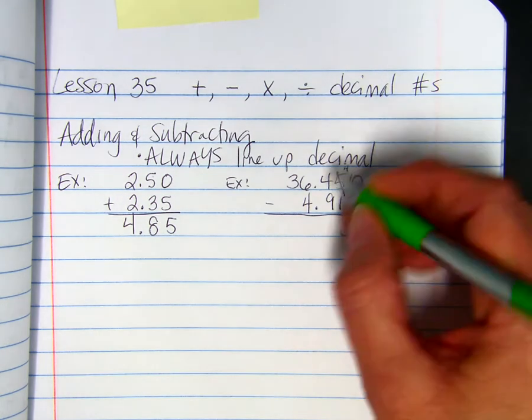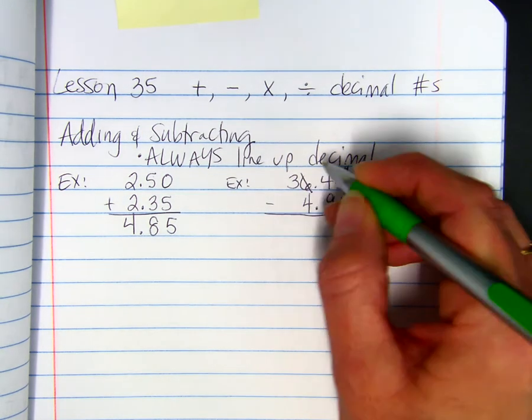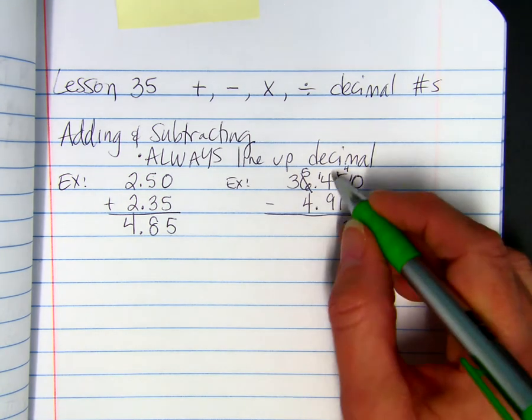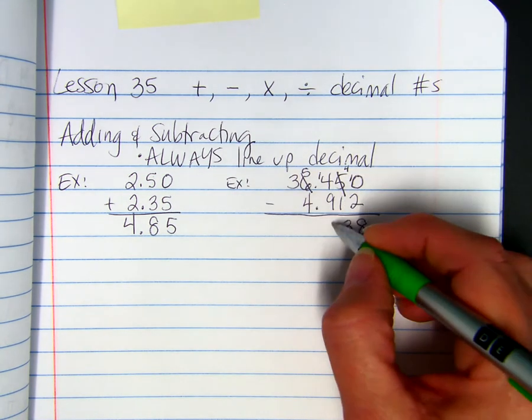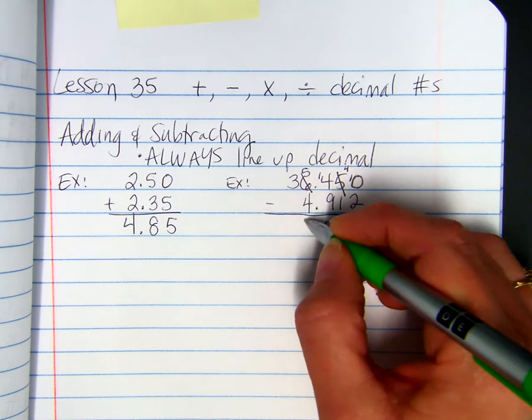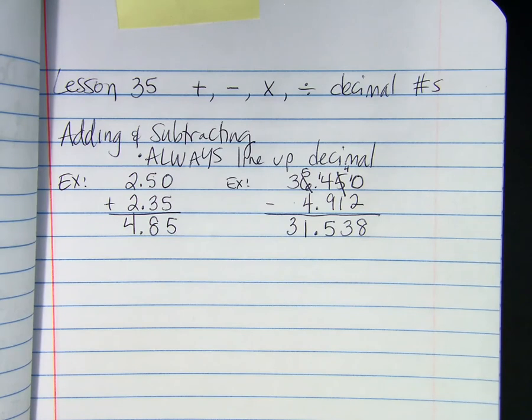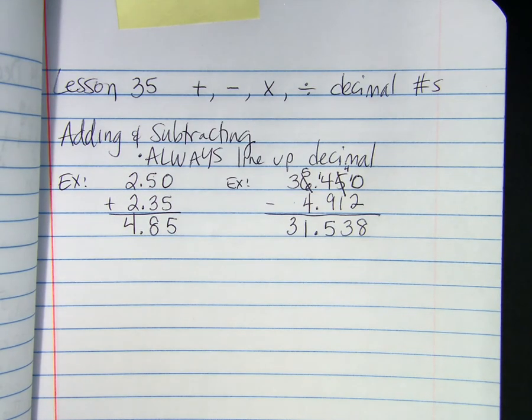And, 4 minus 1 is 3. We'll have to borrow from this 6. Make it a 5. And, 14 minus 9 is 5. 5 minus 4 is 1. 3 minus 0 is 3. Bring down the decimal. So, 31.538.